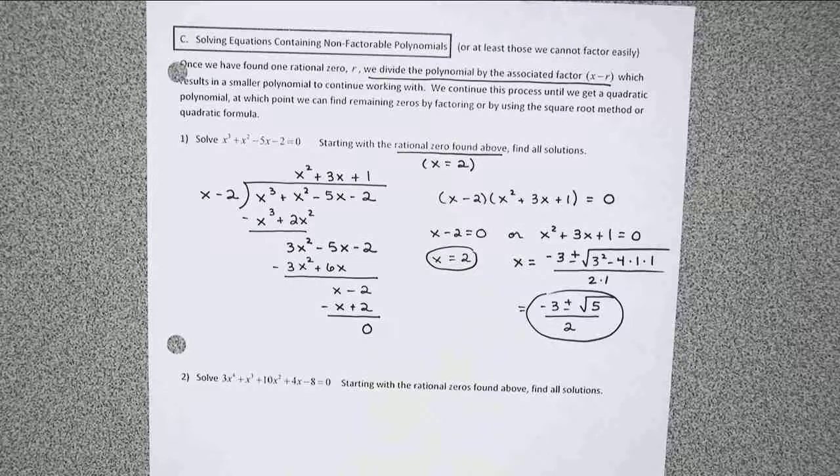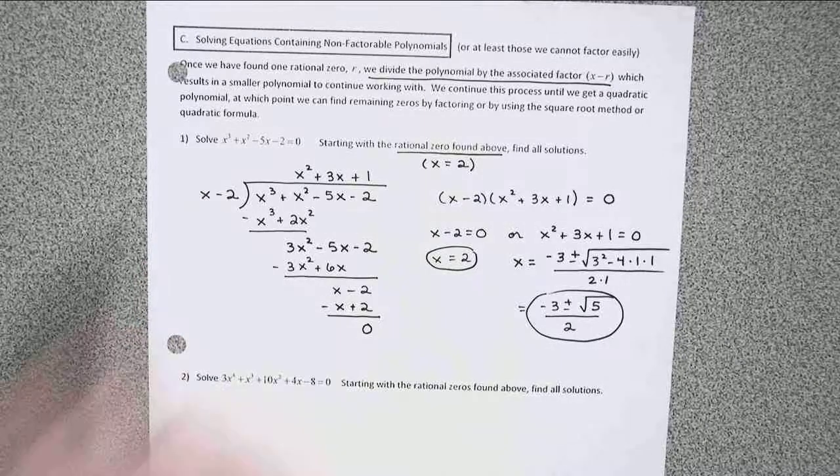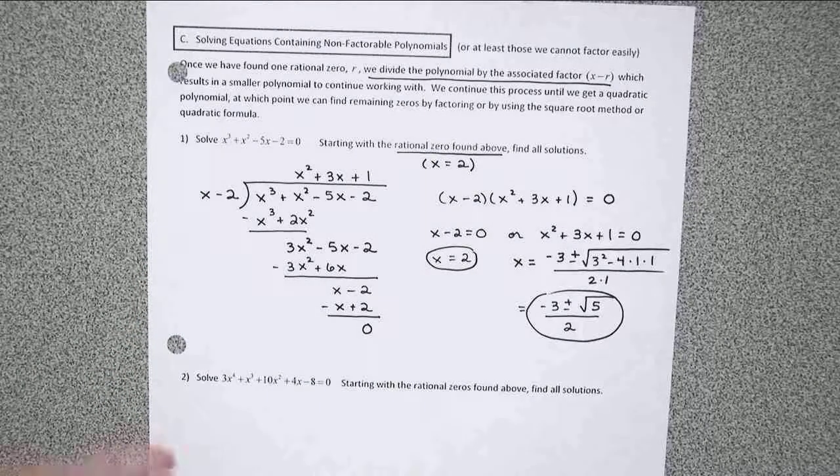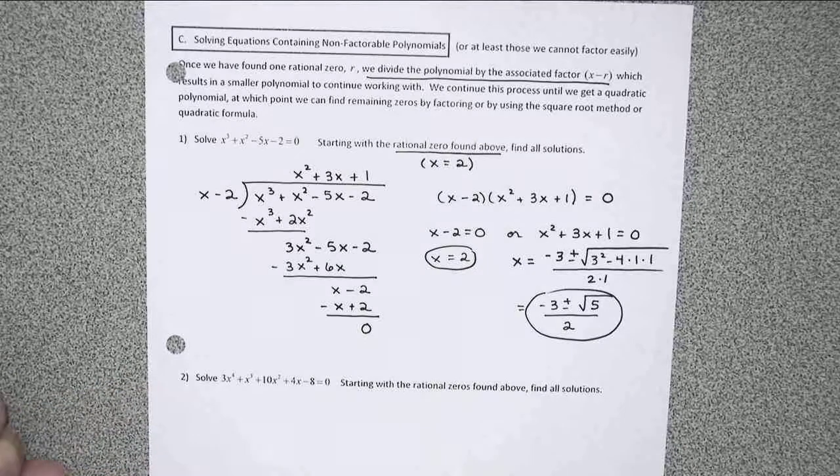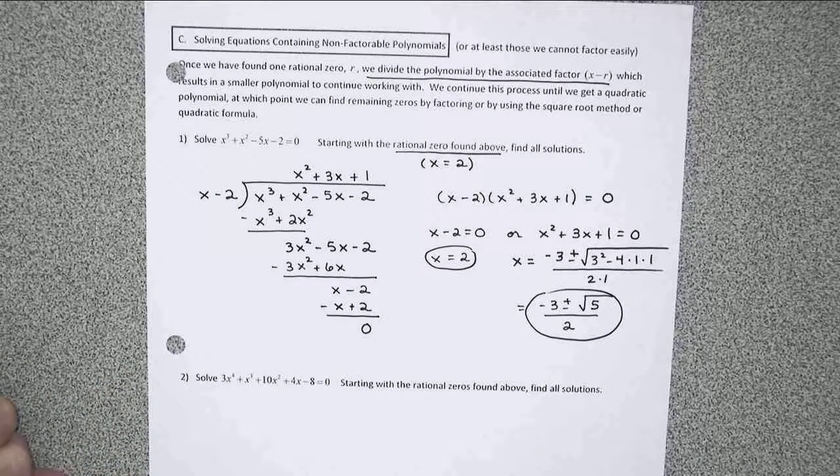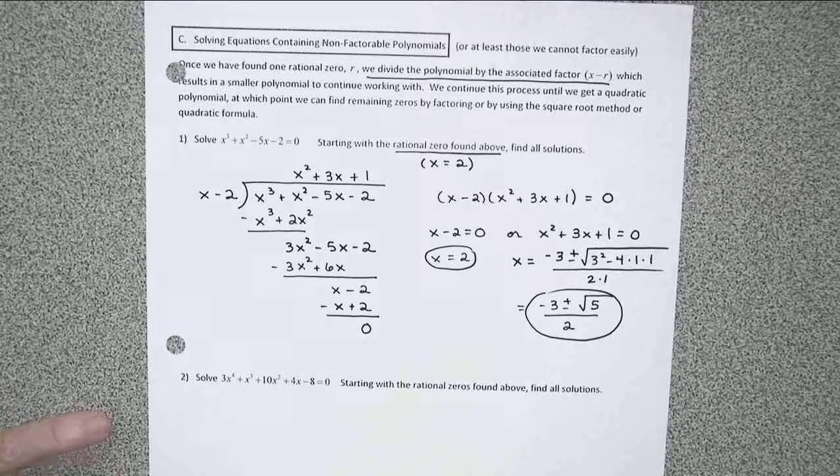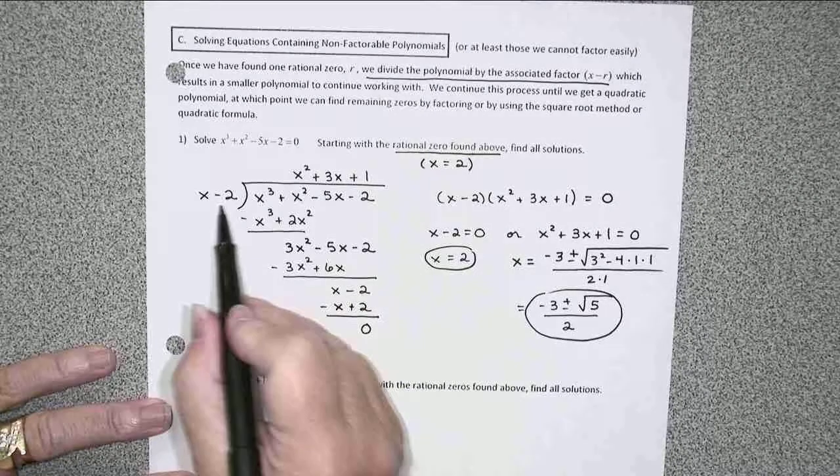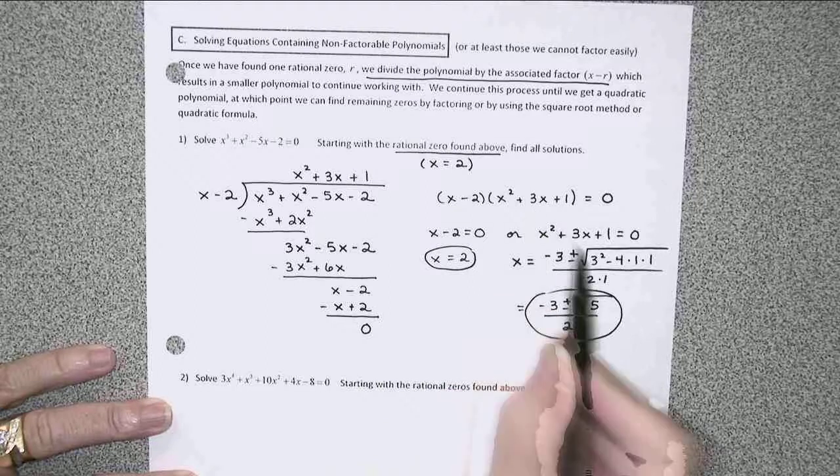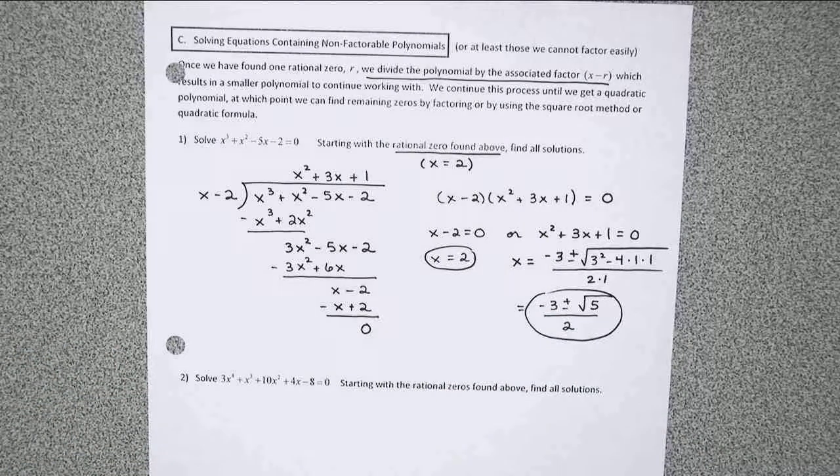There are the three answers that we would expect from a third degree polynomial equation. x equals 2, and then with the plus and the minus, two more irrational solutions there. So basically, the rational zeros are getting used to kind of knock down the degree so that we can use the techniques that we already know.